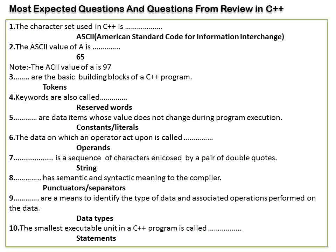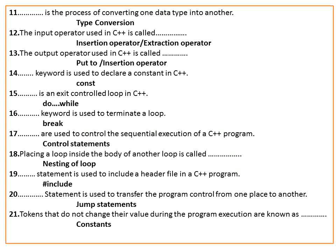Data types are means to identify the type of data and associated operations performed on data. The smallest executor is called a token. Type casting is a process of converting one data type into another. The output operator used in C++ is called the insertion or stream operator.